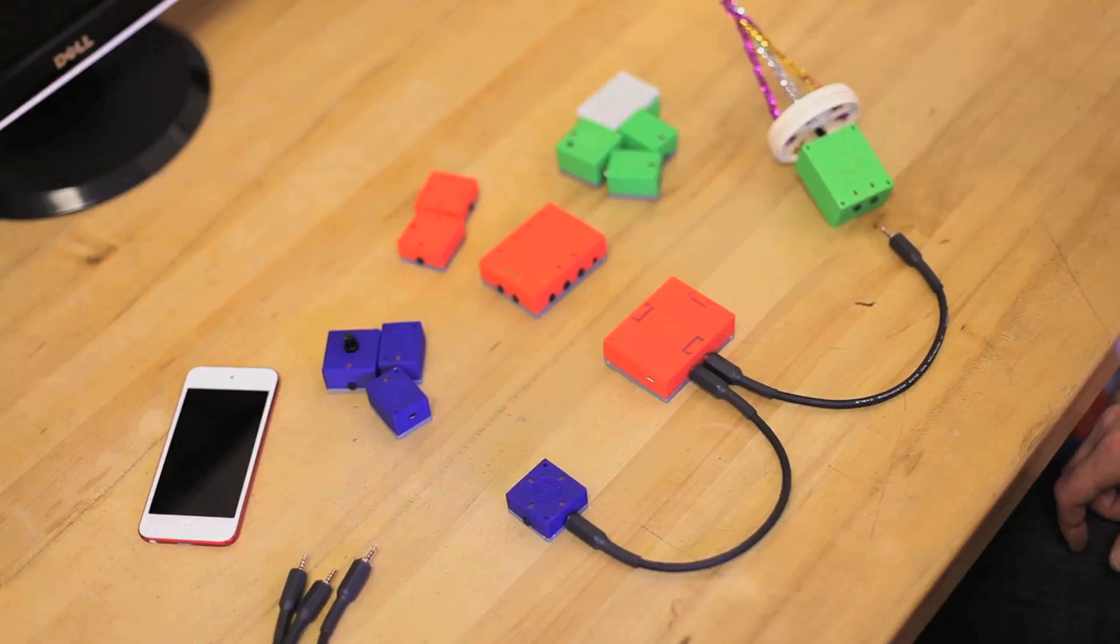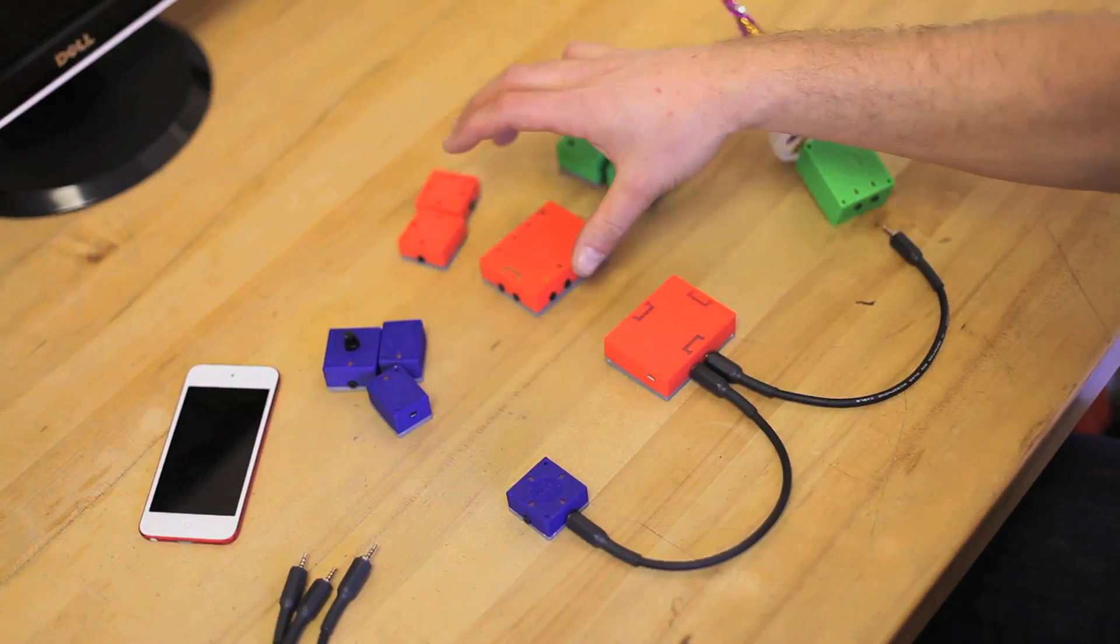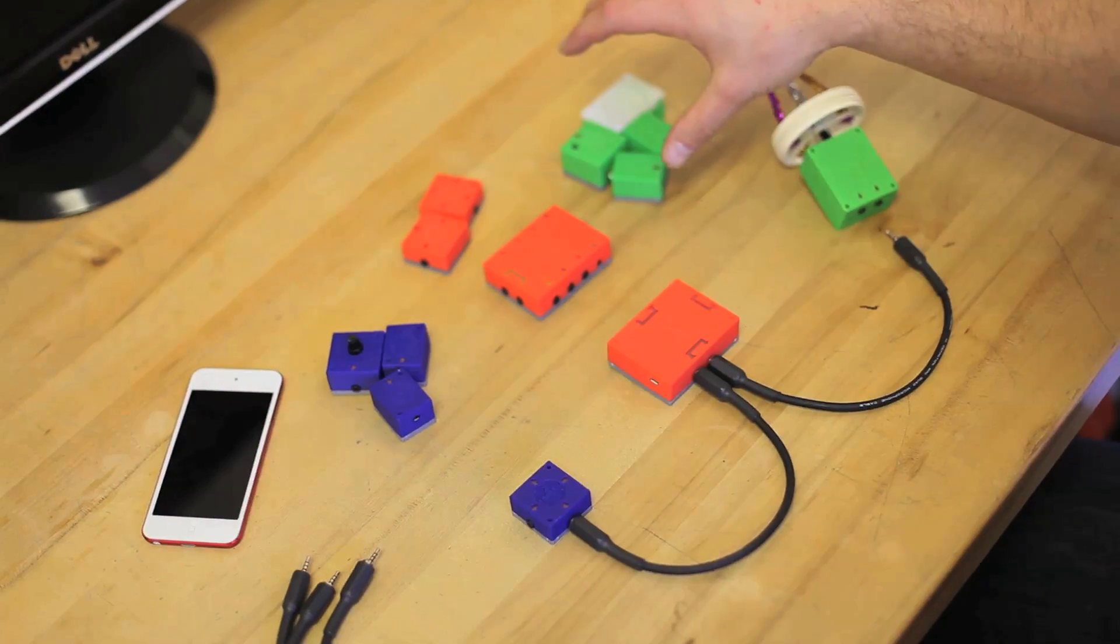So far we've created 13 modules and you can build by following a simple pattern. Blue bricks sense things, red bricks connect, and green bricks do things.